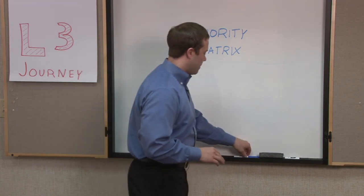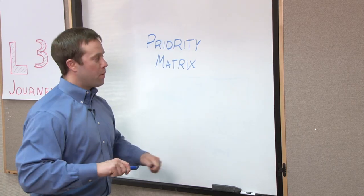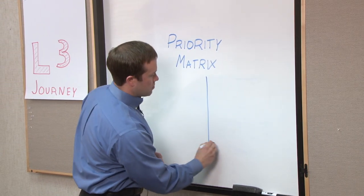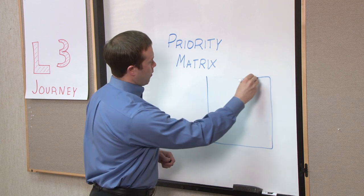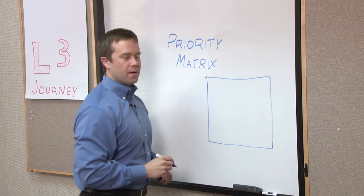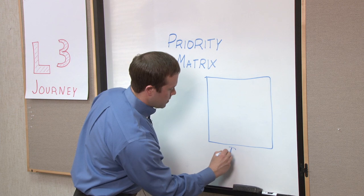So when we put our priority matrix together, what we really want to do is draw a large box. This can be done on a whiteboard or a flip chart, whatever makes the most sense. And we want to compare two things.